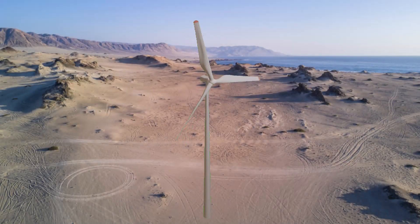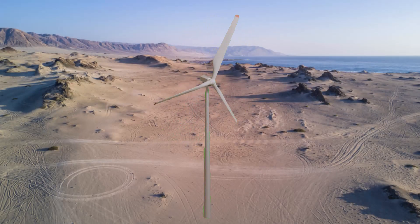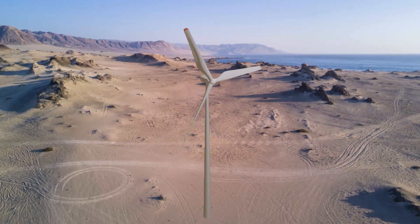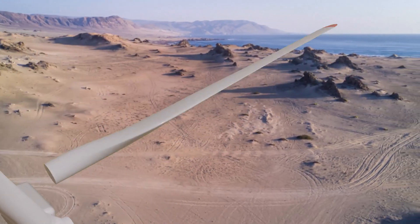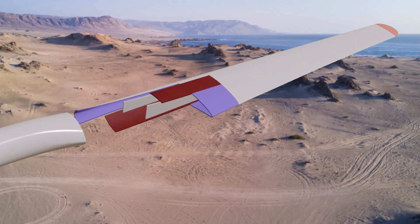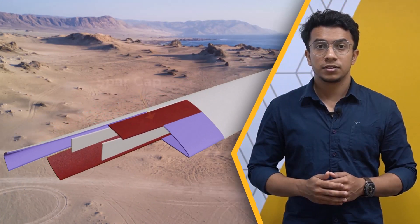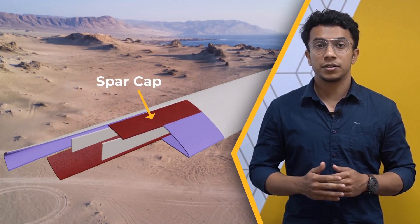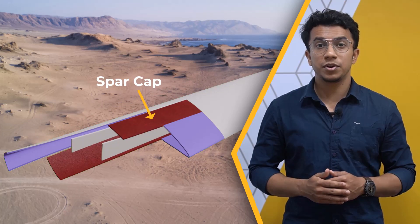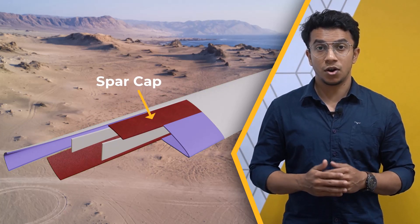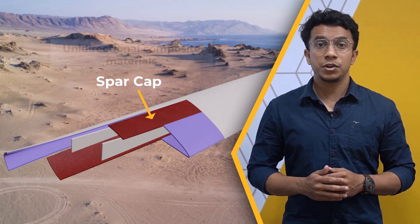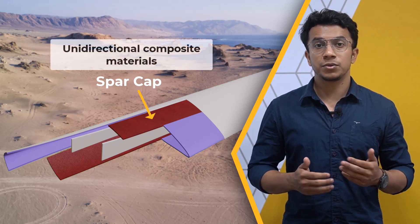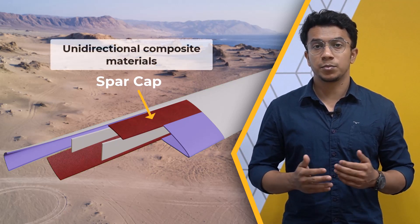But how do composite materials withstand the different loads placed on the blades? The answer lies in the different layers of composite materials used and their alignment with those loads. For example, the spar cap of the turbine blade may be predominantly subjected to tension or compression when the blades bend, so unidirectional composite materials can be used for this component.